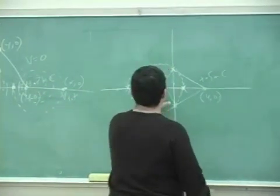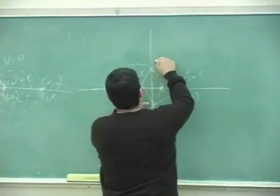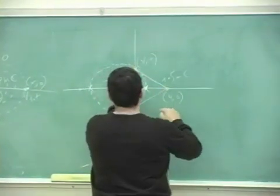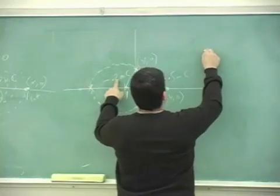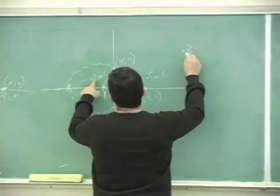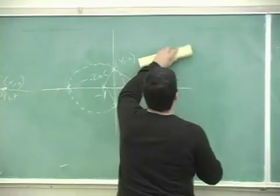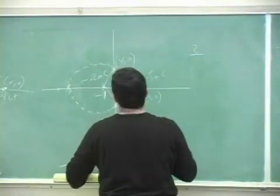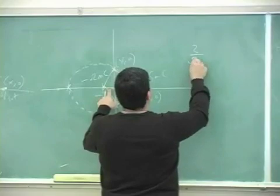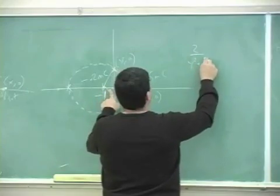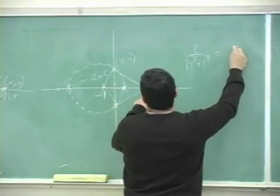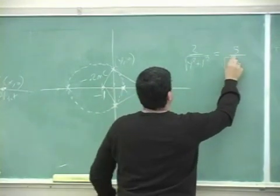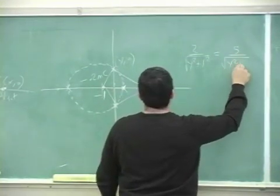Well, then you just do this distance. It's going to be y squared plus 1 squared. So it's going to be 0.2. You don't even need the 0.2 because they're both 0.2. So you can just say 2 divided by square root of y squared plus 1 squared is equal to 5 divided by square root of y squared plus 4 squared.